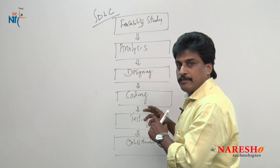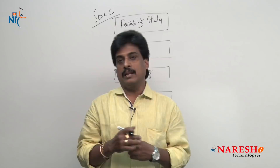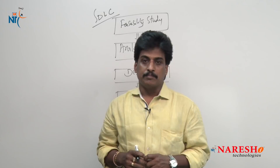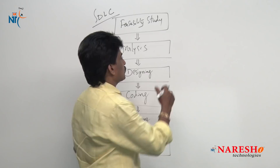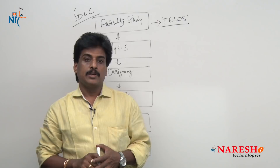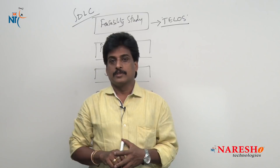Let me explain the first phase — feasibility study. In this phase, the business analyst team gathers business requirements from the client environment. To gather the requirements, they follow a formula called TELOS. T stands for technical feasibility, E stands for economic feasibility, L stands for legal feasibility, O stands for operational feasibility, and S stands for schedule feasibility.